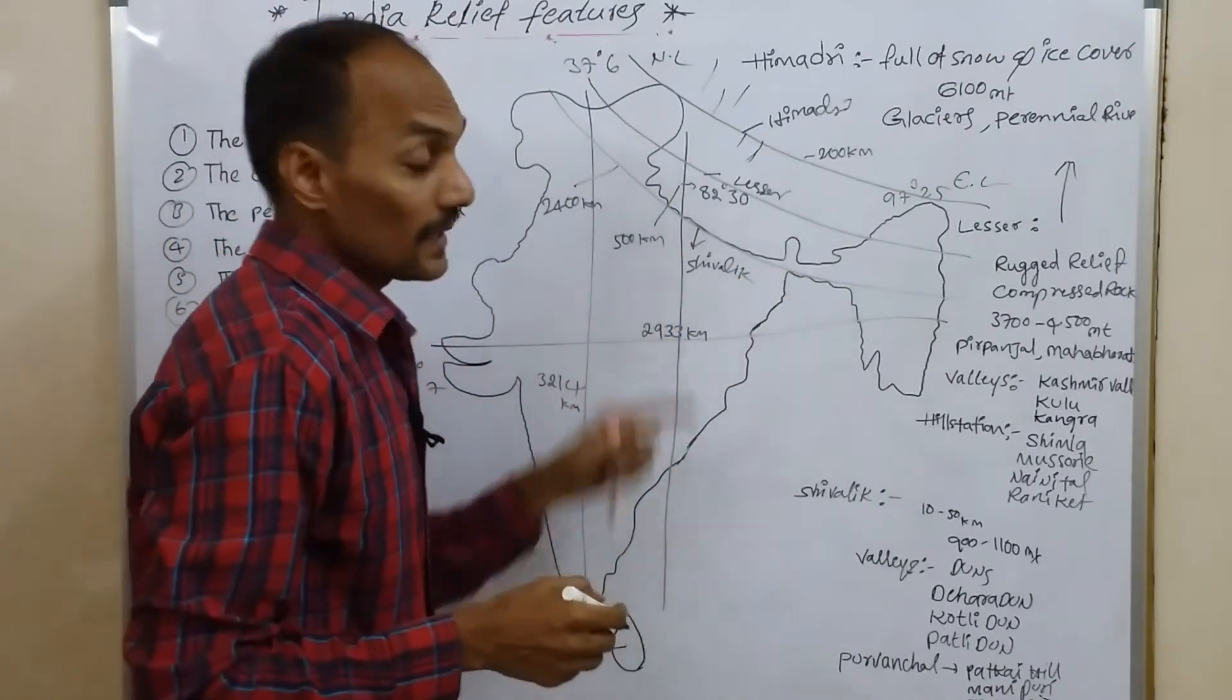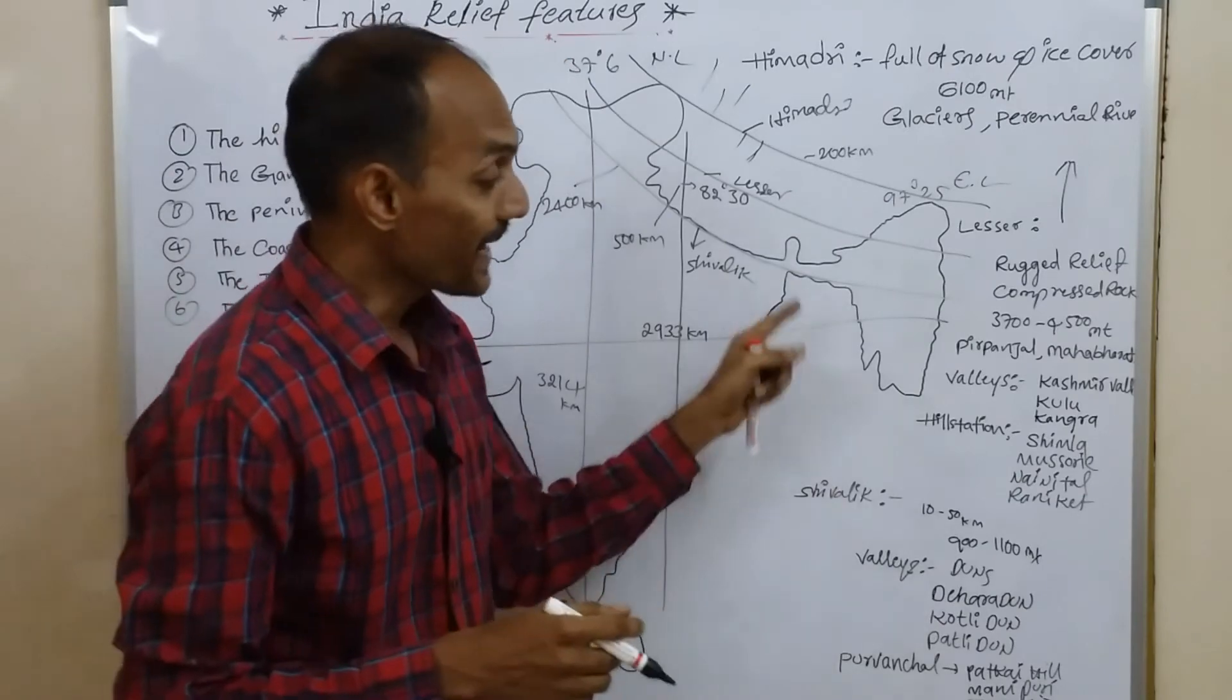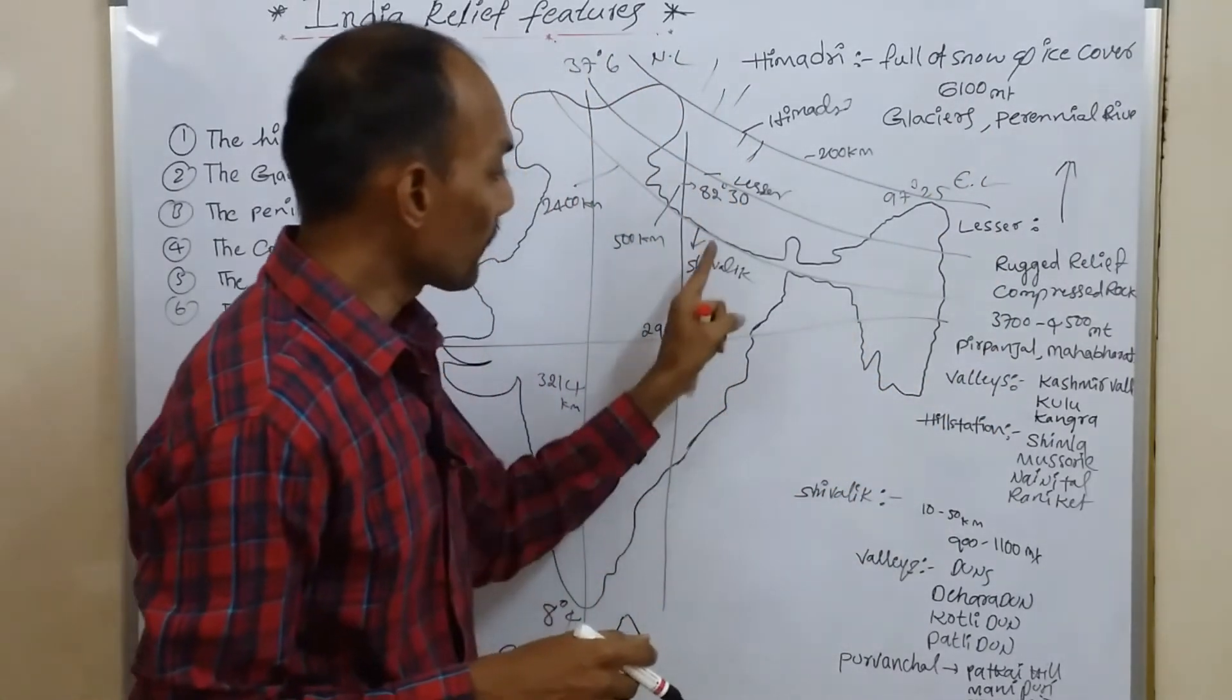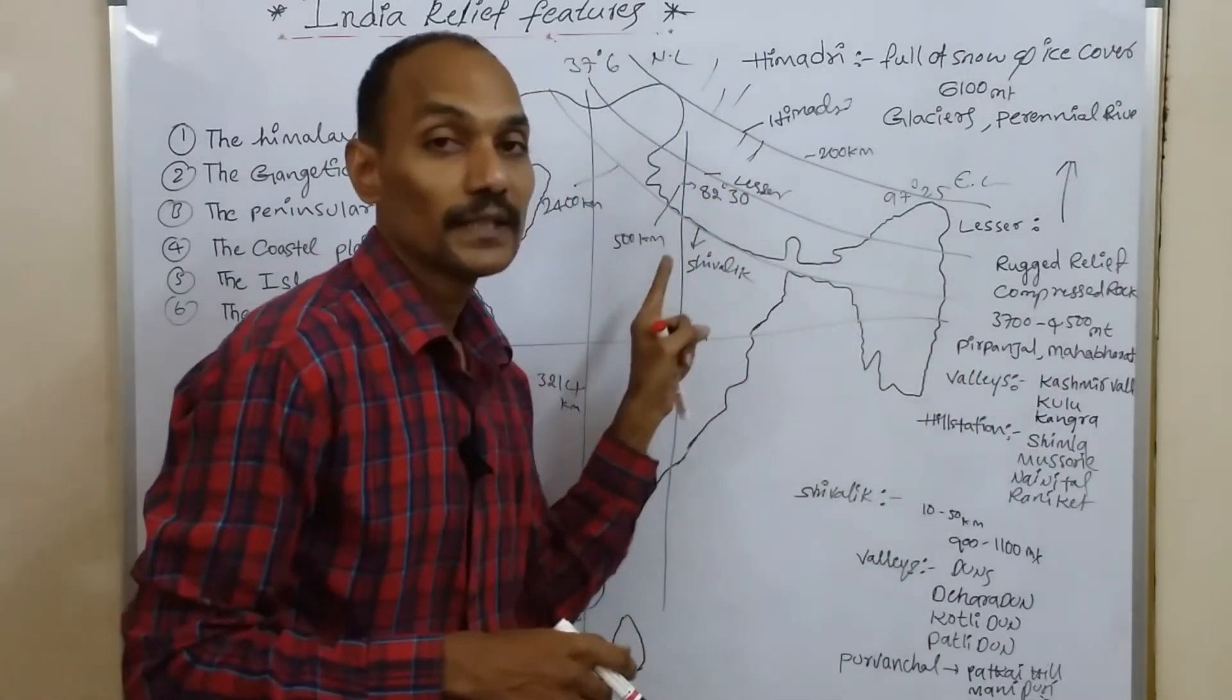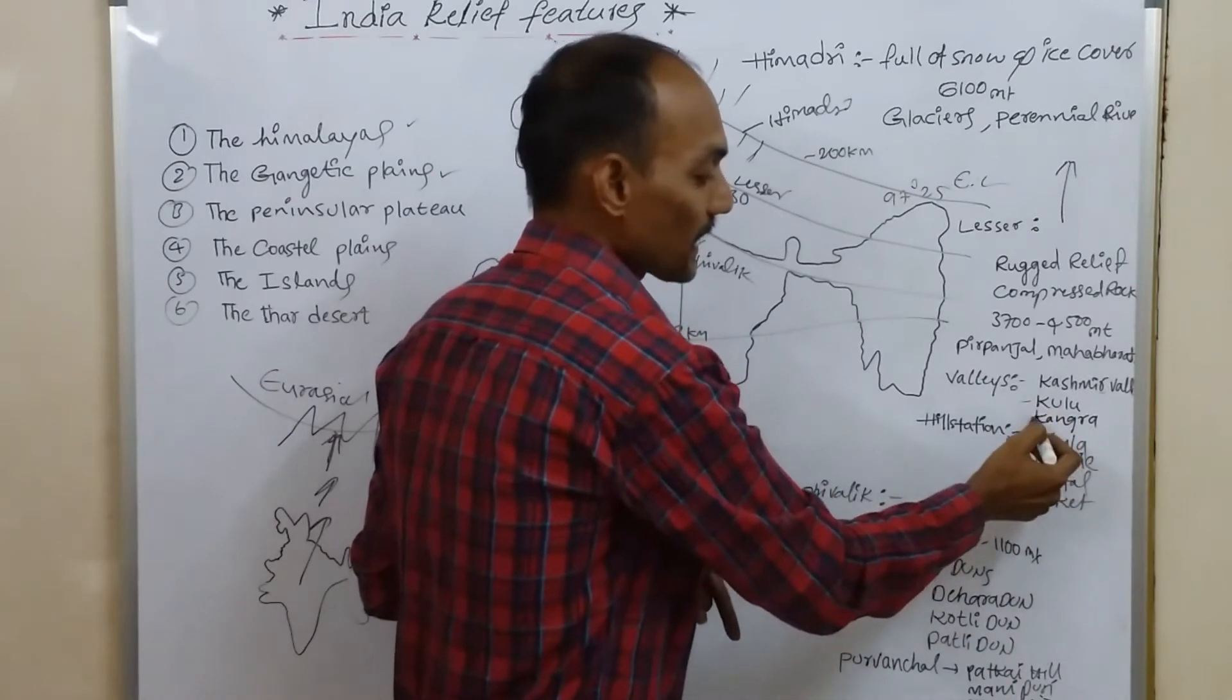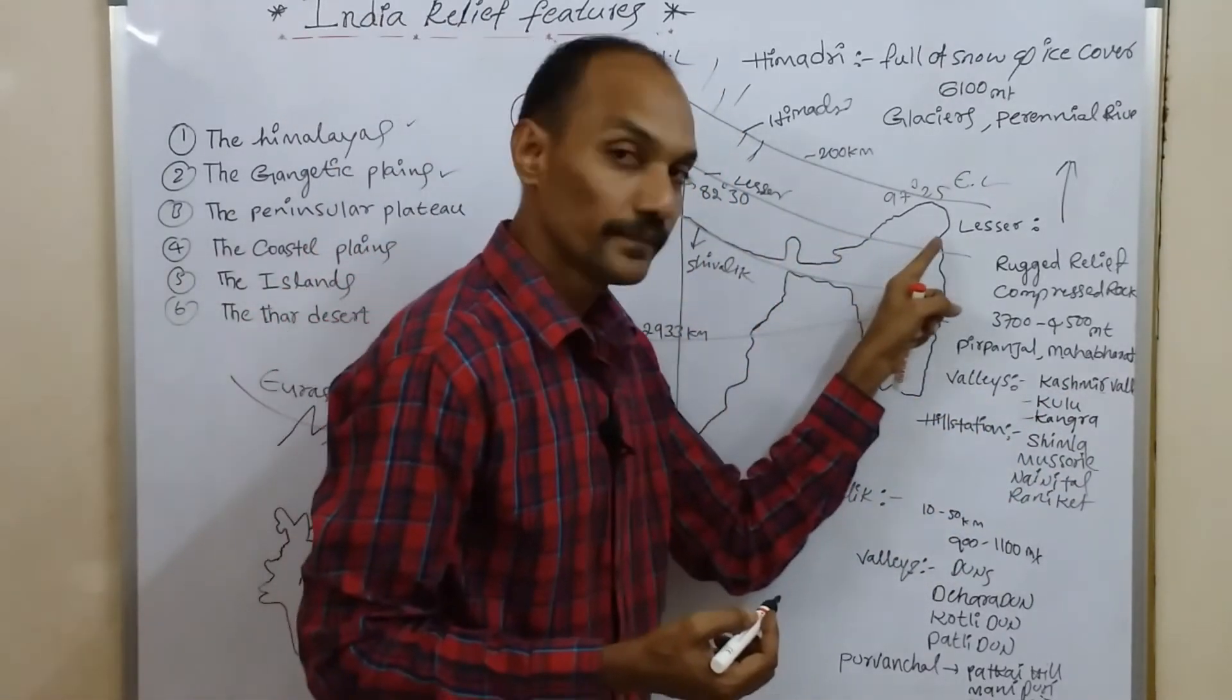Next, Lesser Himalayas. Lesser Himalayas consist of rugged relief and compressed rocks. Rugged relief means not smooth, rough places. Its elevation is 3,700 to 4,500 meters. The most important ranges in Lesser Himalayas are Pir Panjal and Mahabharata Ranges. We can find some valleys: Kashmir Valley, Kulu Valley and Kangra Valley.